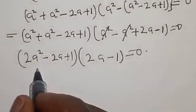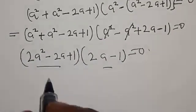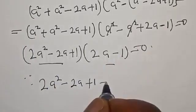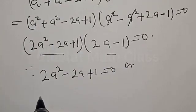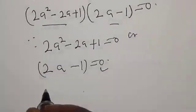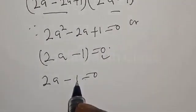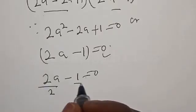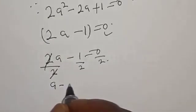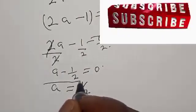There are two cases: 2a² minus 2a plus 1 equal to zero, or 2a minus 1 equal to zero. From 2a minus 1 equal to zero, divide both sides by 2, and we get a equal to 1 over 2. That is one of the roots.